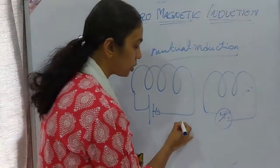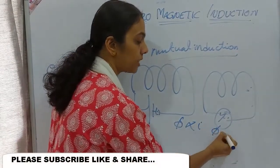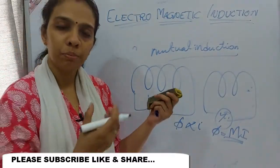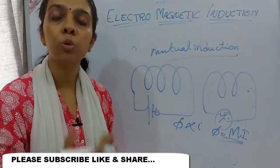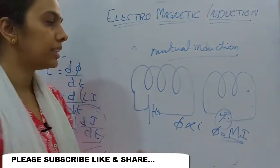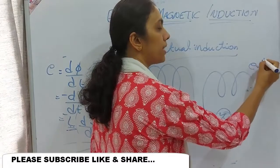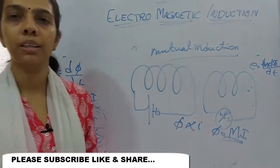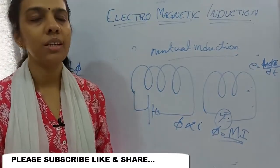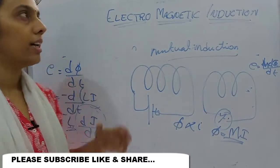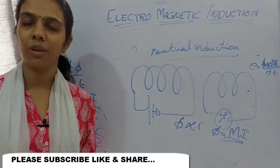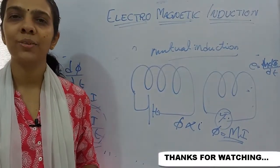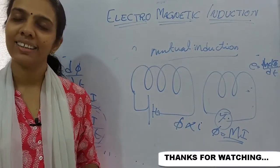In mutual induction, flux is proportional to current: Φ = MI, where M is the coefficient of mutual induction or mutual inductance. The induced EMF is E = −M(dI/dt). So we've covered eddy currents, self-induction, and mutual induction. That's all for today — if you like the channel, please subscribe, like, and share. Thank you!